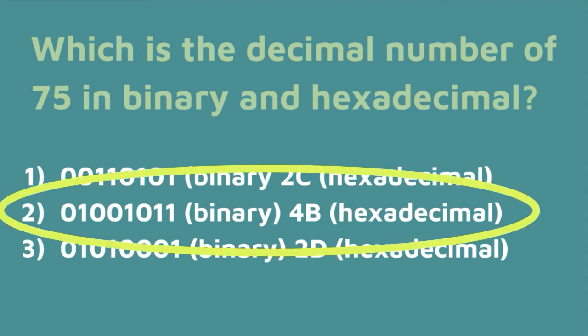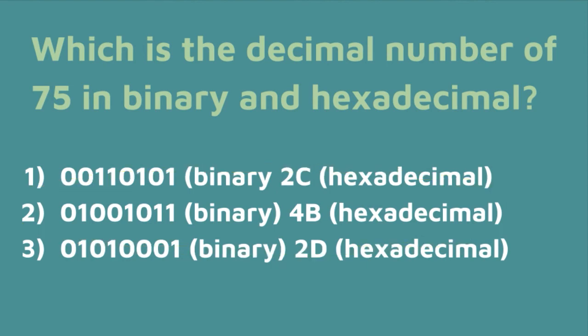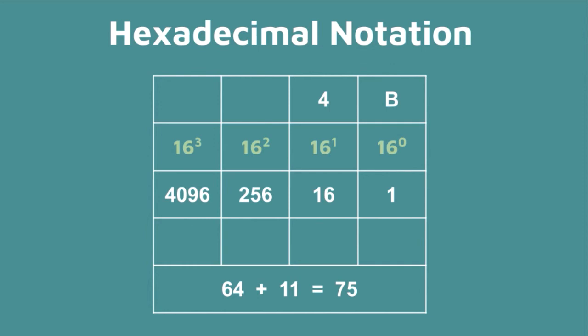If you chose number two, you are correct. Let's add it up. B, which is equivalent to 11 in hexadecimal, times one is 11. Four, which is in the 16's place, four times 16 is 64. 64 plus 11 is 75.